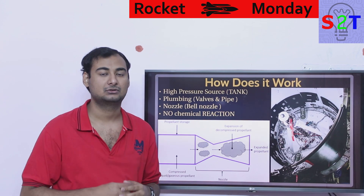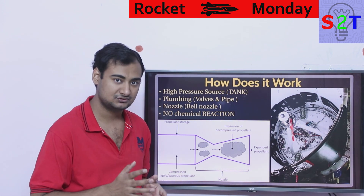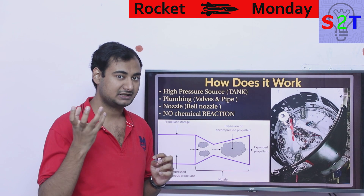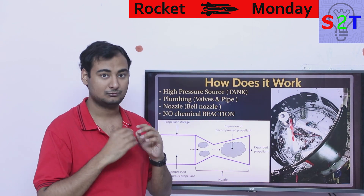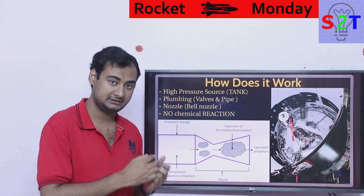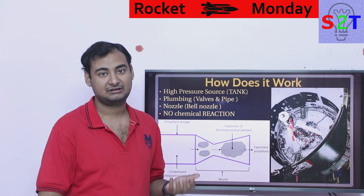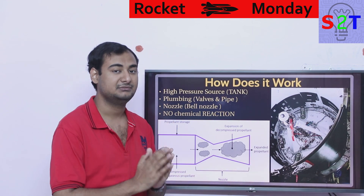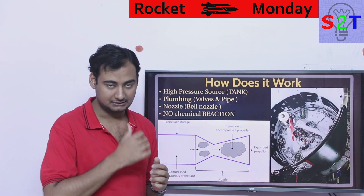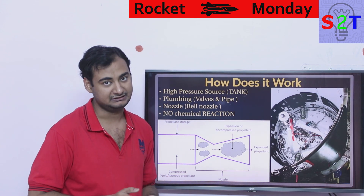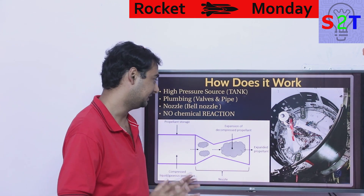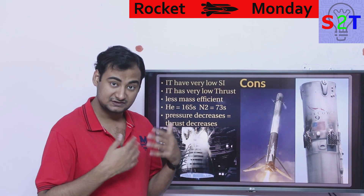One key aspect: there is no chemical reaction. In most reaction control systems, some variety of peroxide is used, and chemical energy is released by breaking it down through a catalyst or heating. Here there is no such energy — whether you use hydrogen, helium, or anything else, the energy comes purely from the pressure in the tank. There is no chemical reaction involved, which is why it is called a cold gas thruster.